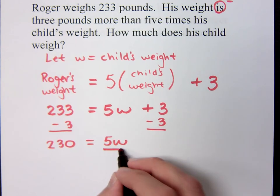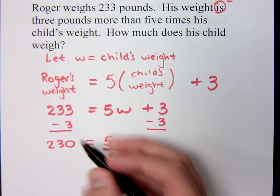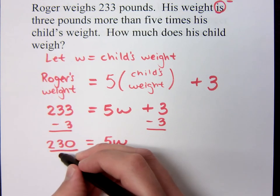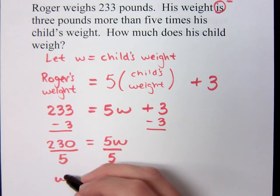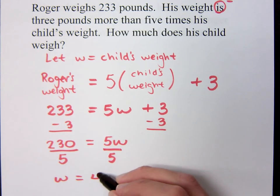So to finish this, you've got to get W by itself. I don't want five Ws. I just want one. So divide both sides by five. Right, when we do this, we find out that W is equal to 46.